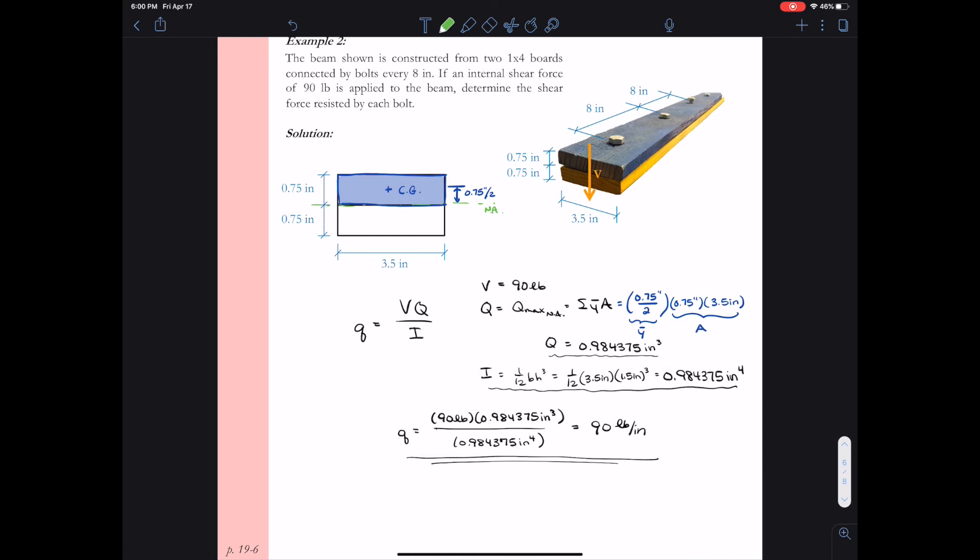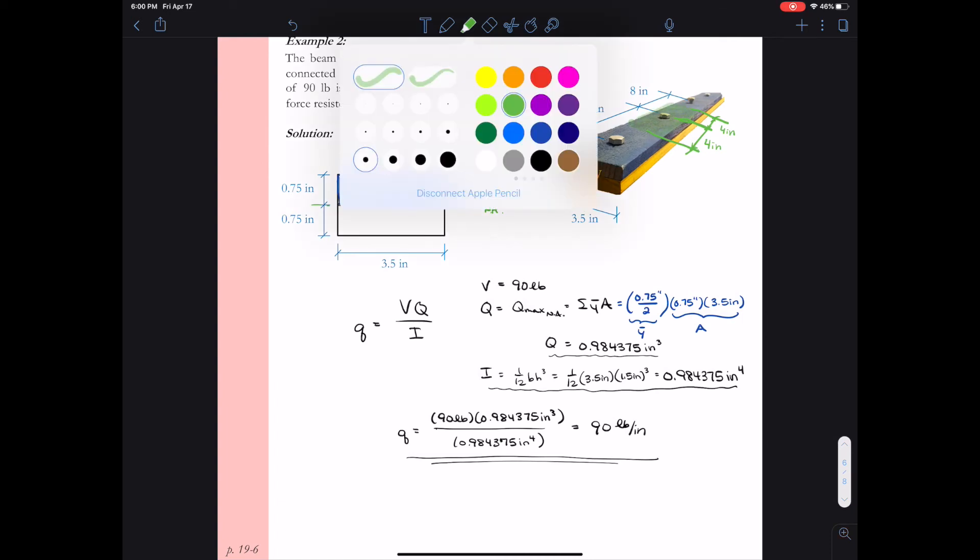So now we know the tributary width that that bolt handles so let's go ahead and sketch that into our notes. So we're looking at this bolt line and we say that this bolt will hold half the shear flow from half the distance to the next bolt line. And so that was 4 inches in either direction. So let's go ahead and shade that in and label that as our tributary width.